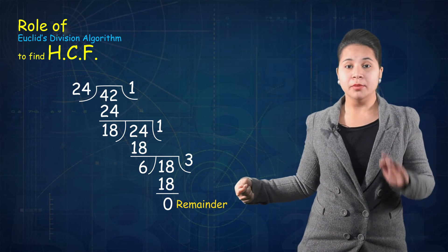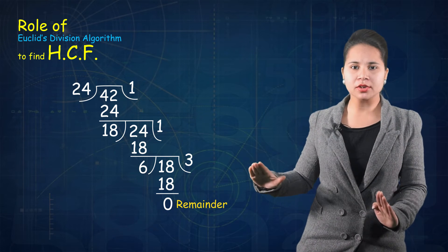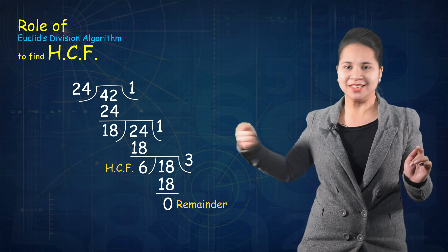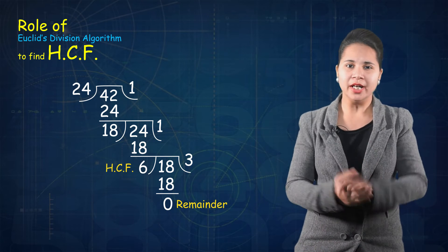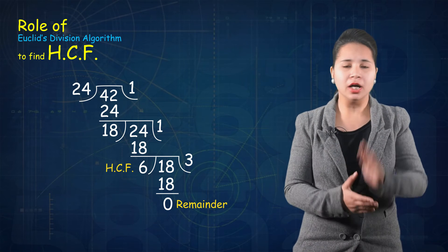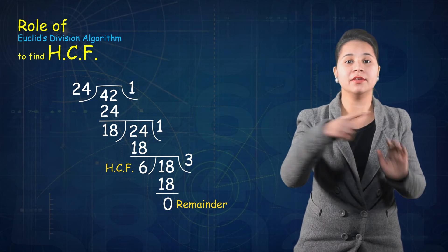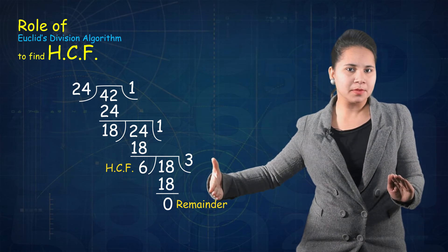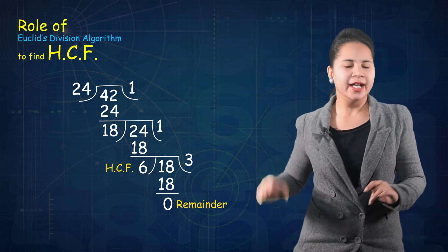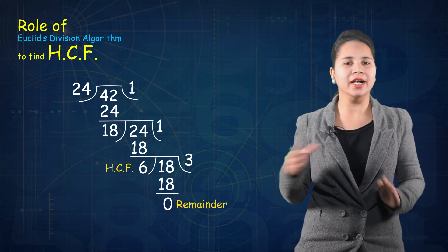The remainder is 0. Here the remainder has become 0, so we stop the division process. The rule is: when the remainder becomes 0, the divisor becomes the HCF. Therefore, 6 is the HCF of 24 and 42 — just as we discussed in the earlier example, 6 is the greatest common divisor and also the HCF of 24 and 42.